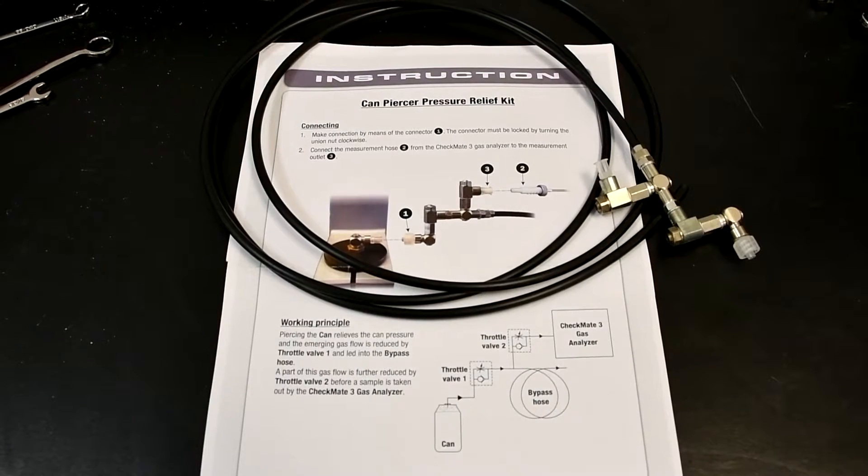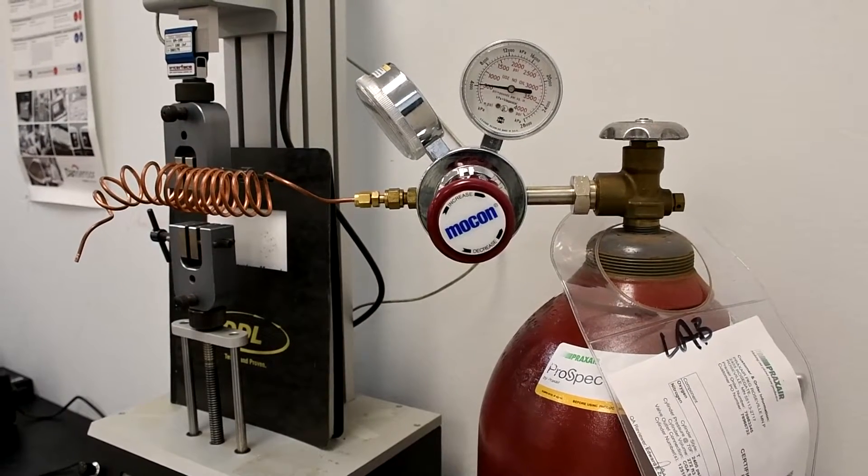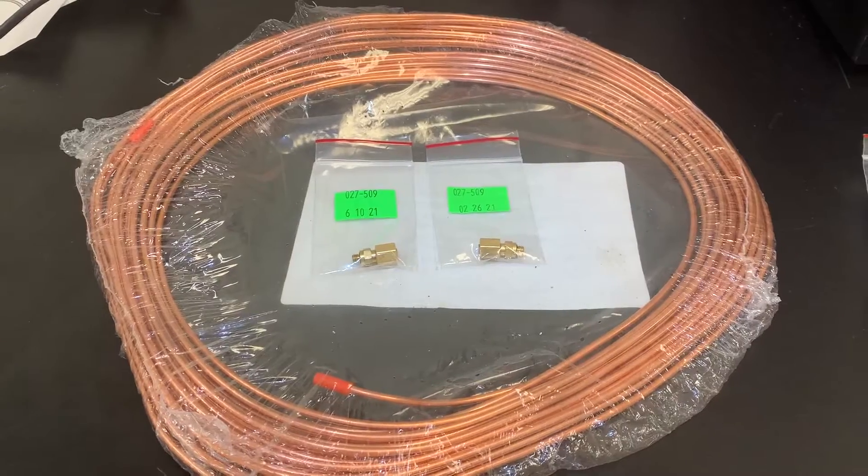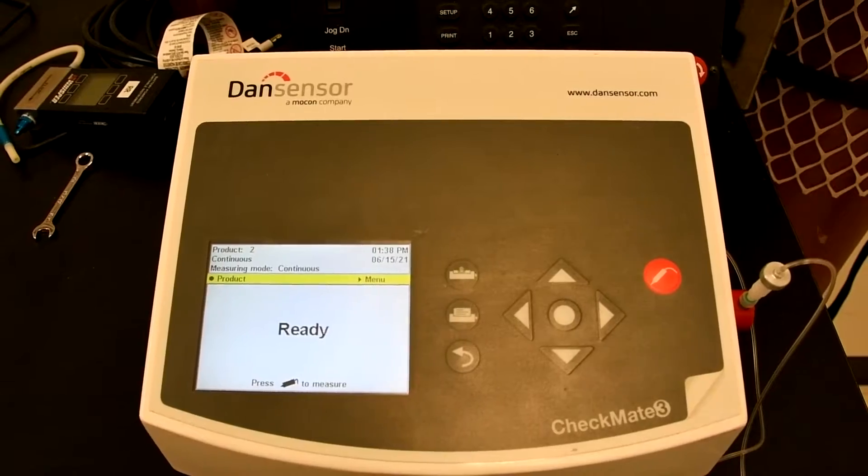Here's what you'll need. The pressure relief kit included in your field verification kit. Gas tank. We recommend a T size. Connections. Connector fittings and copper tubing included in the field verification kit. Checkmate 3.